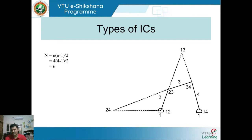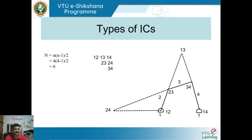For a 4-bar mechanism with n=4 links, the total number of ICs is N = 4×3/2 = 6. We have located ICs 1,2 — 2,3 — 3,4 — and 1,4, giving four ICs. The remaining two are IC 1,3 and IC 2,4, which must be found by construction. The list of all six ICs: 1,2 — 1,3 — 1,4 — 2,3 — 2,4 — 3,4.